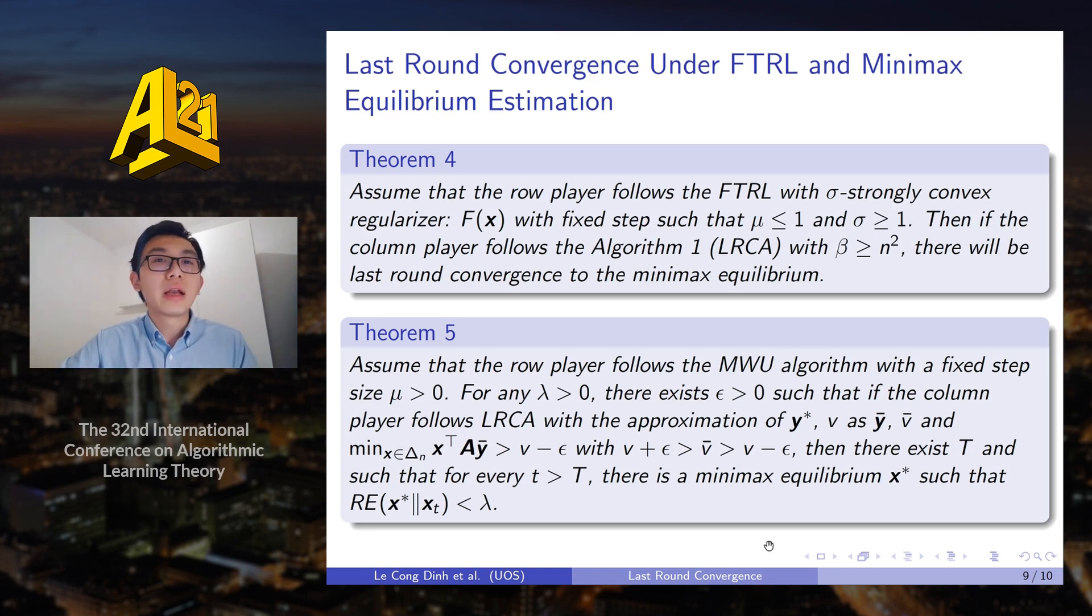Because we know that in practice it may be hard to guess an exact min-max equilibrium, we consider the case when the column player only gets access to the estimation of the min-max equilibrium. And then we show that in this case, the strategies of the players will converge to epsilon-Nash equilibrium of the game, when epsilon will depend on the accuracies of estimation of the min-max equilibrium.